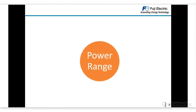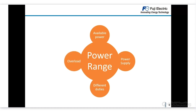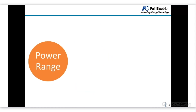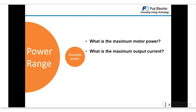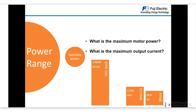In the power range category, important points include available power, power supply type, different duties, and the overload needed. Looking at available power, we need to know the maximum motor power or maximum output current for the installation. We have products covering a very wide range — from the VG1 stack type reaching up to 2.4 megawatts in medium duty at 4,000 amps, down to micro products at only up to 4 kilowatts and 9 amps.